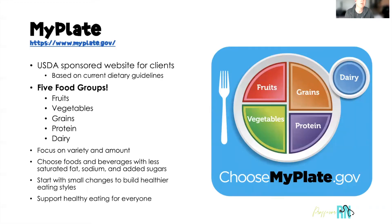A long time ago we used to call the five food groups the food pyramid, but now we call it MyPlate, which is the visual depiction you see on the screen. MyPlate also has a website, myplate.gov, which is a USDA-sponsored website for clients — although as healthcare providers we can also glean a lot of information from it. It is based on current dietary guidelines and uses all five food groups. The goal of MyPlate is to support healthy eating for everyone in the United States by focusing on variety and correct amounts of nutrients, choosing foods low in saturated fat, sodium, and added sugars, and helping clients build healthier eating habits — all of which is the basis for nutrition as it relates to health promotion.